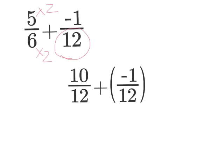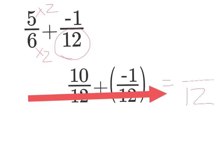So now we have 10 twelfths plus negative 1 twelfth. So what I'm going to do is I am going to take those twelfths and I'm just going to write off to the right that my answer is going to be in twelfths. And I'm going to ignore the denominator now because I've already taken care of that. So I'm just going to look at the numerators and I have 10 plus negative 1. So I'm going to use my integer rules, different signs. So I'm going to subtract and keep the sign of the larger number.